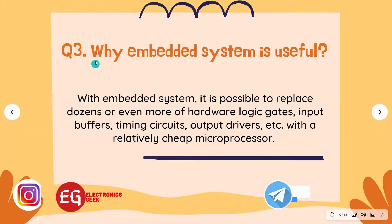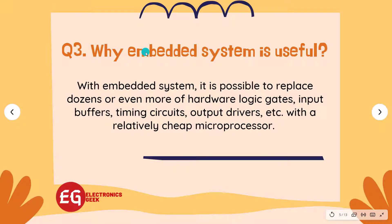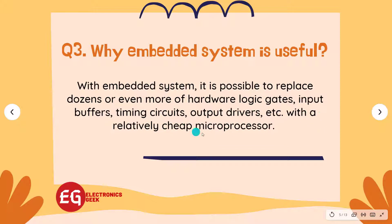Question 3: Why is an embedded system useful? Answer: With an embedded system, it is possible to replace dozens or even more hardware logic gates, input buffers, timing circuits, output drivers, etc., with a relatively cheap microprocessor.